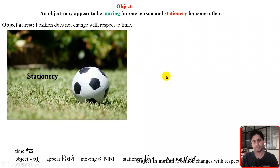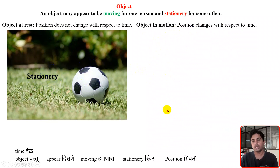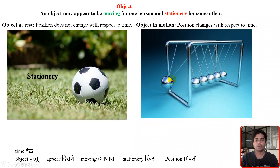So that is one type of object. The second is object in motion. Whenever the position changes with respect to time, we will say that object is in motion. As you can see in this picture, there is a spherical ball attached to a spring.